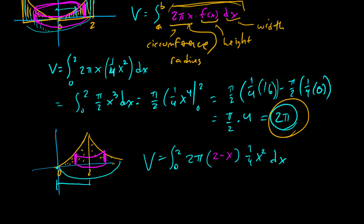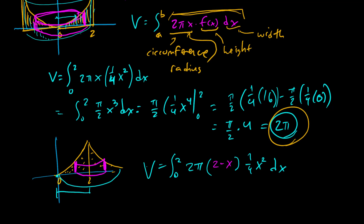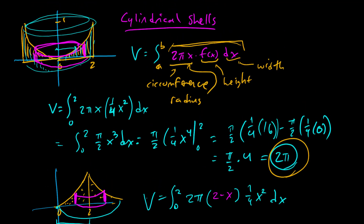Depending on the context, sometimes washers works really well, sometimes cylindrical shells works better. Sometimes we can only use one; sometimes we can use both but the work is much simpler with one method. It's good to have more tools — that's never a bad thing. I hope these make sense. If you have questions on discs, washers, or cylindrical shells, let me know, and thank you for watching.